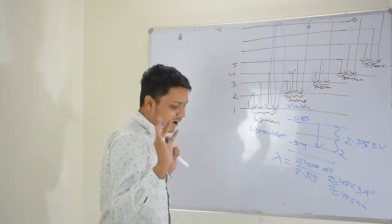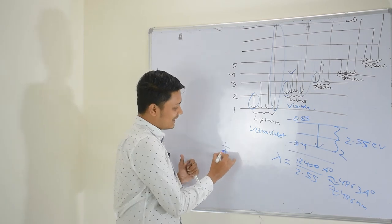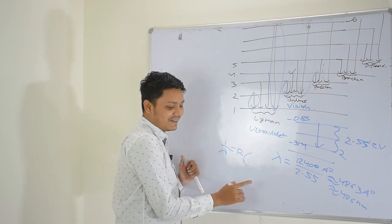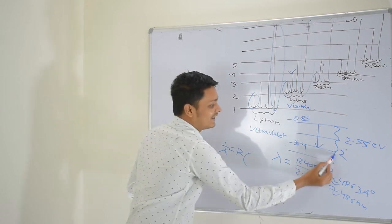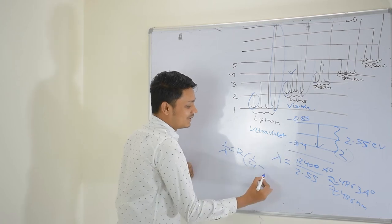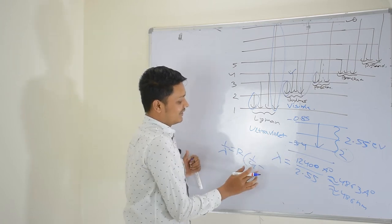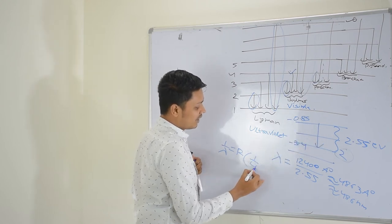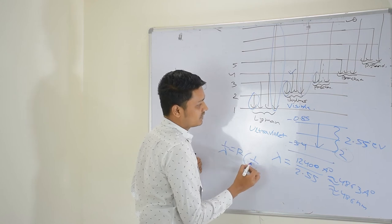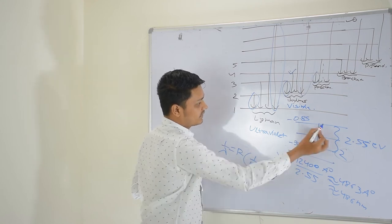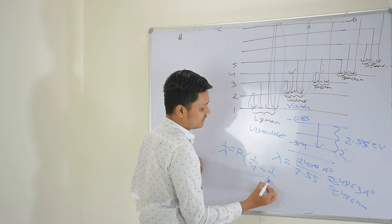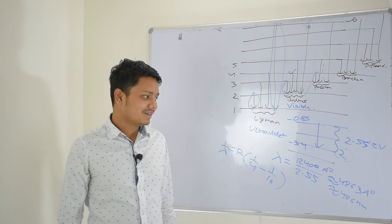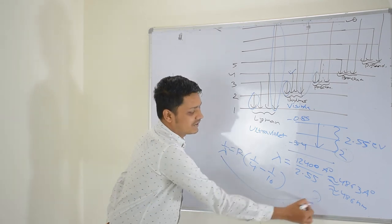You can solve it from the Rydberg formula also. That is: 1 over lambda equals R times (1 over N-final-squared minus 1 over N-initial-squared). For the second line of Balmer series, N-final is 2 and N-initial is 4. So: 1 over lambda equals R times (1 over 4 minus 1 over 16). You will get the same wavelength.